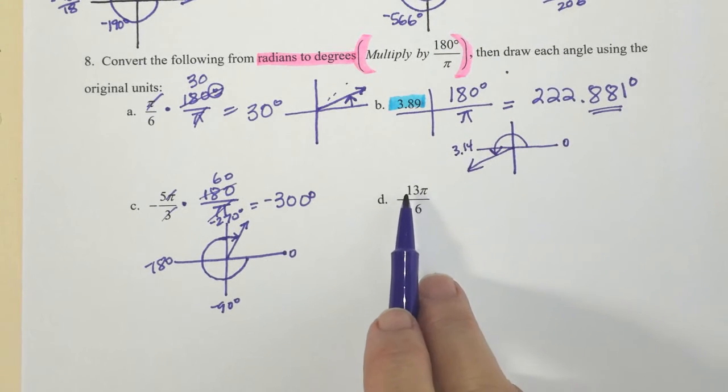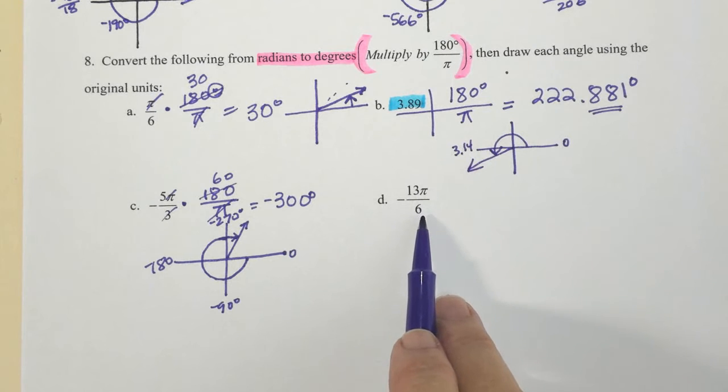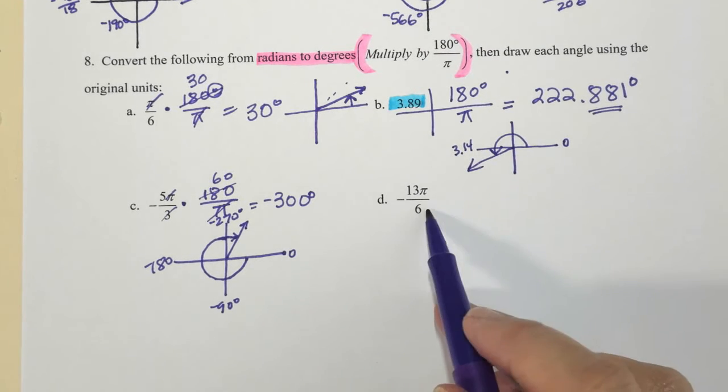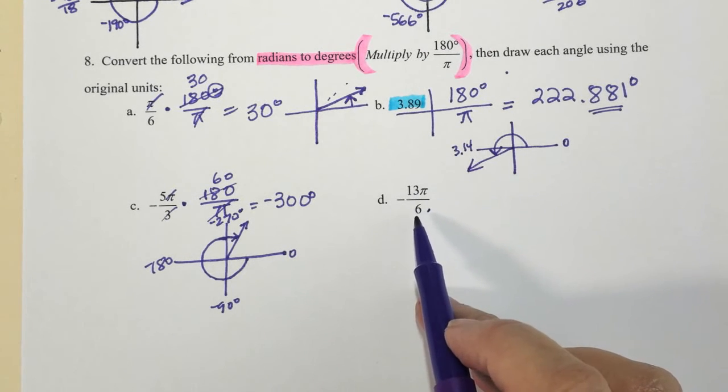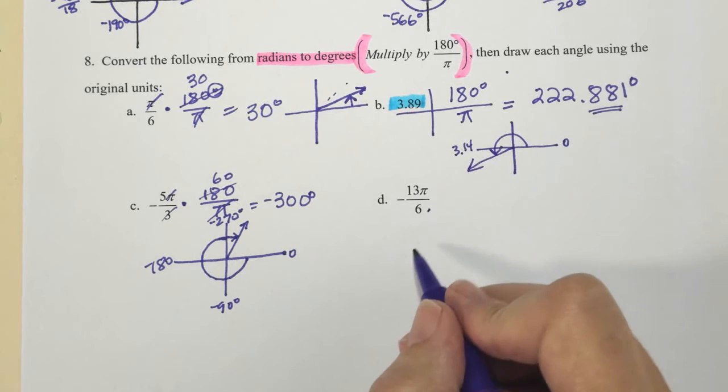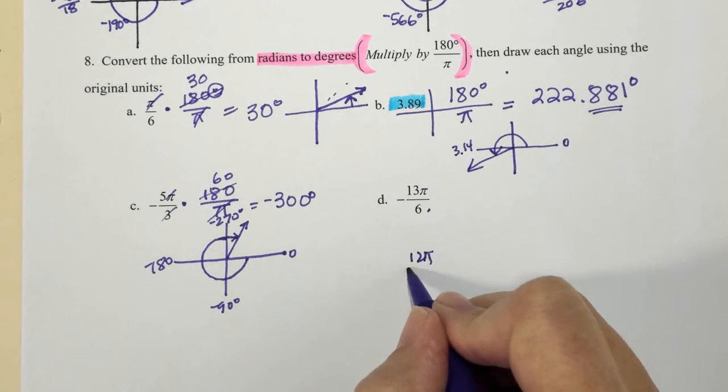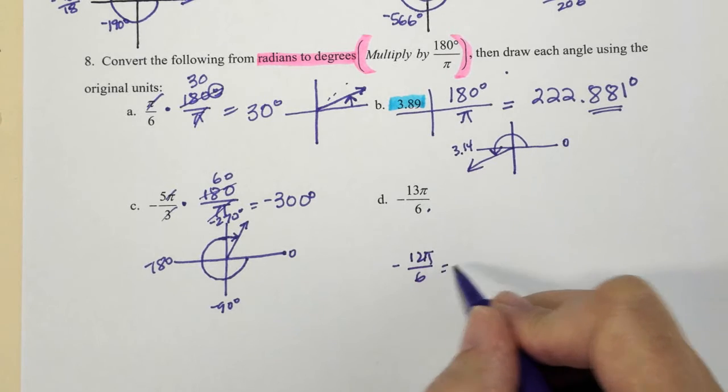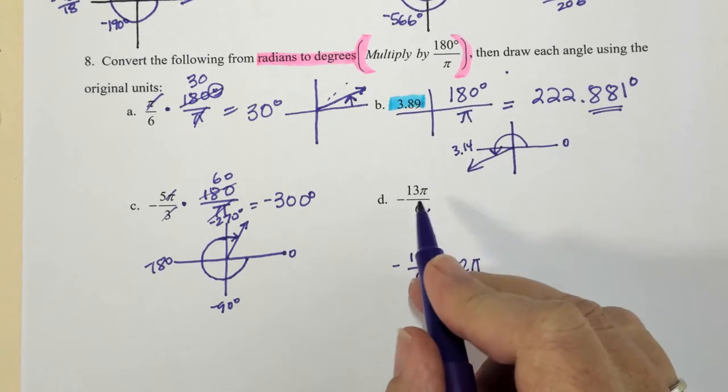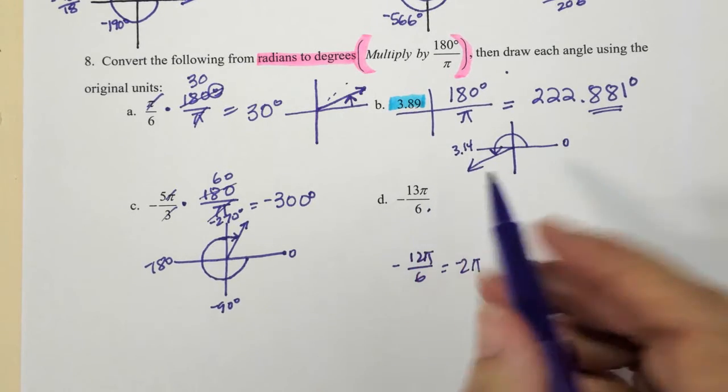Now negative 13π over 6. When I look at this, I immediately know that if I had 12π over 6, I'll make it negative, I would have a negative 2π, and this is more. So this is more than a full rotation.